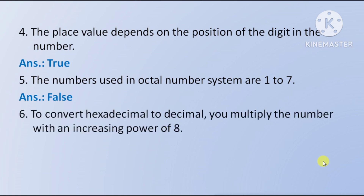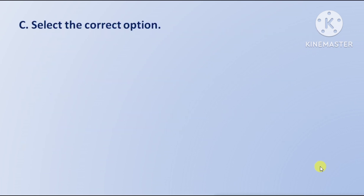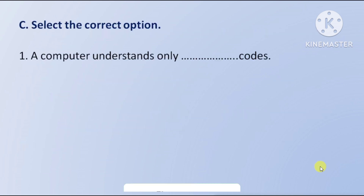Next question: to convert hexadecimal to decimal you multiply the number with an increasing power of 8. This is false, because you multiply the number with an increasing power of 16.